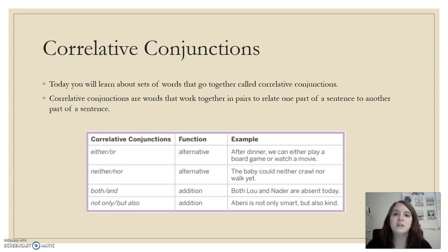So a correlative conjunction is what we're going to be talking about today. It's a set of words that go together. They work together in pairs to relate. So for example, either and or, neither nor, both and, not only, but also. Those are pairs of words that correlate with each other.